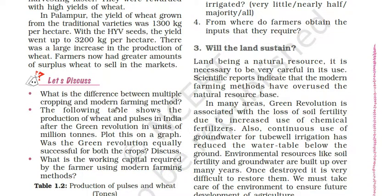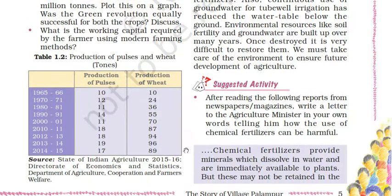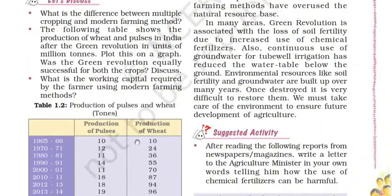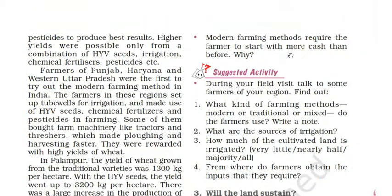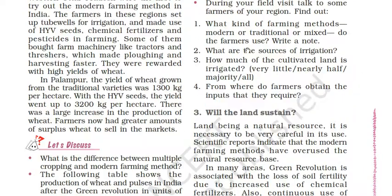What is the difference between multiple cropping and modern farming methods? A table shows the production of wheat and pulses in India after the Green Revolution in million tonnes - plot this on a graph and discuss whether the Green Revolution was equally successful for both crops. Modern farming methods require the farmer to start with more cash than before. Consider what working capital is required by farmers using modern farming methods.